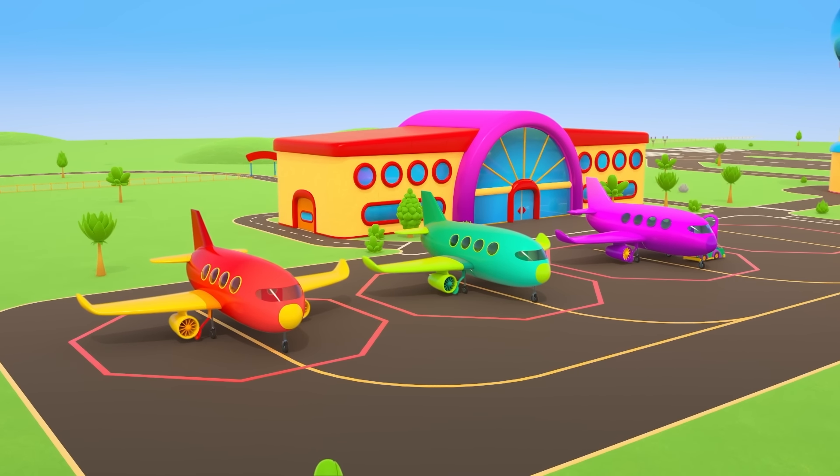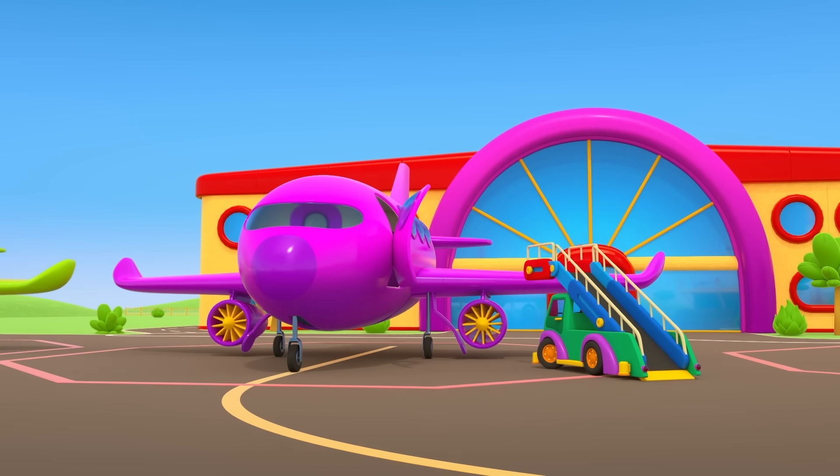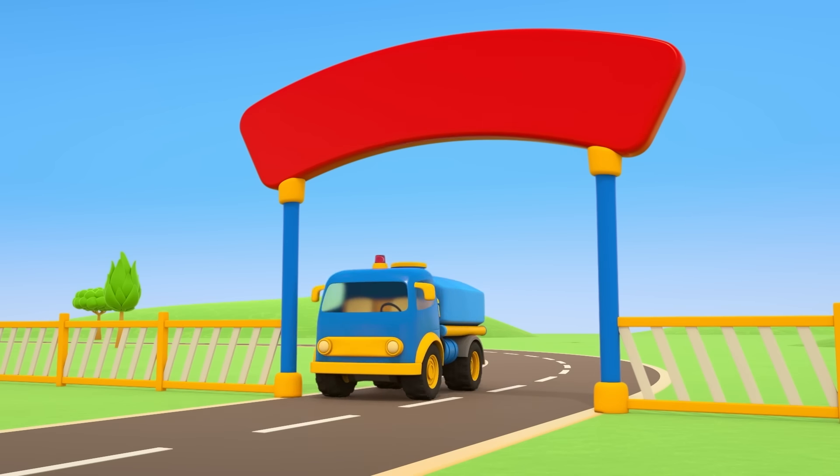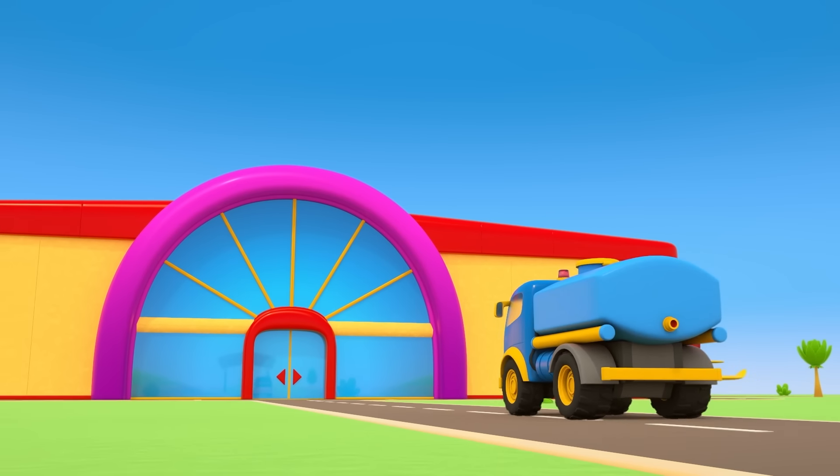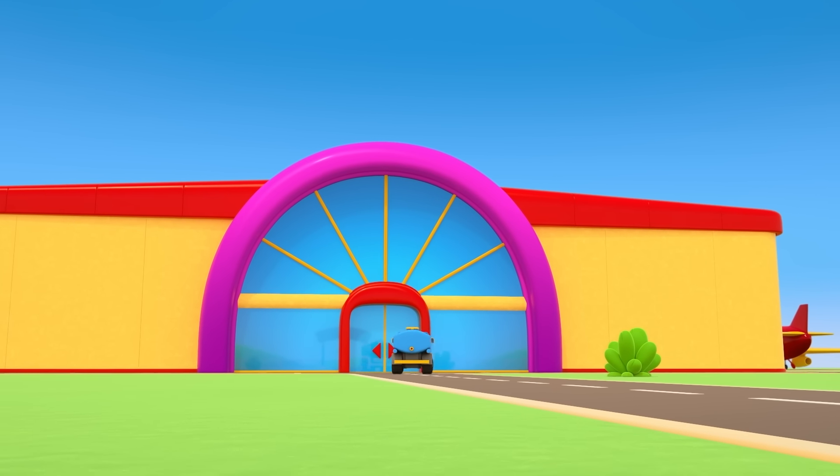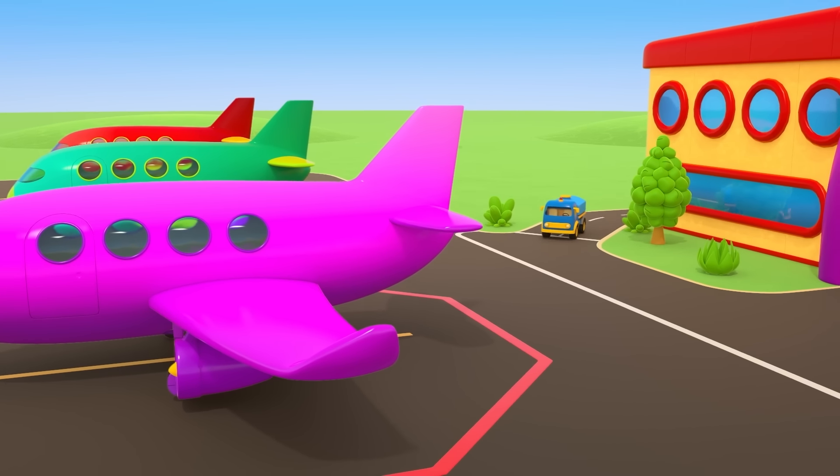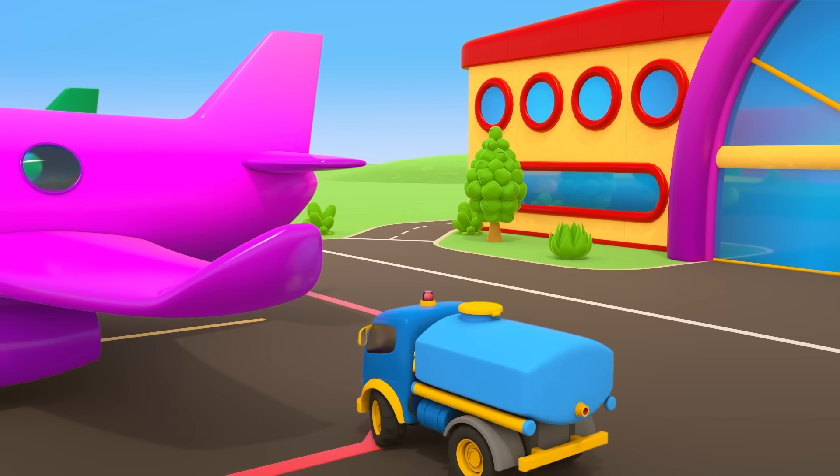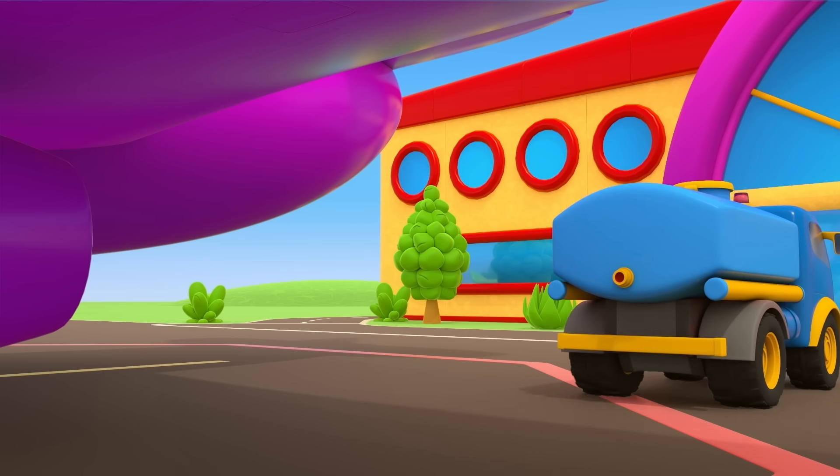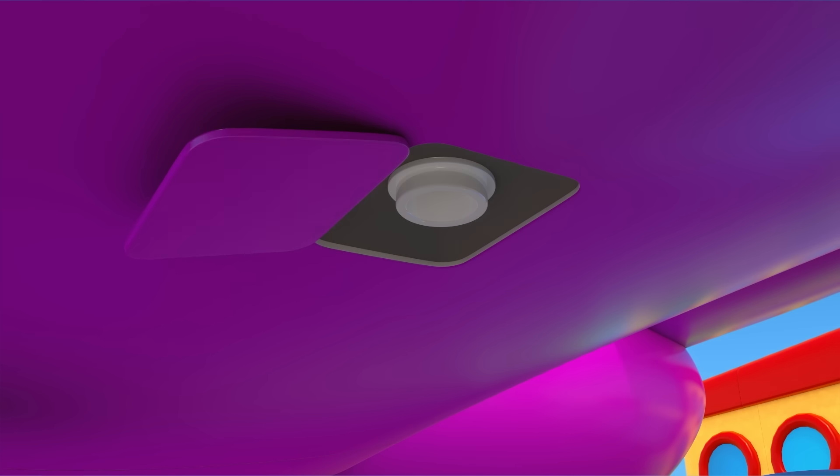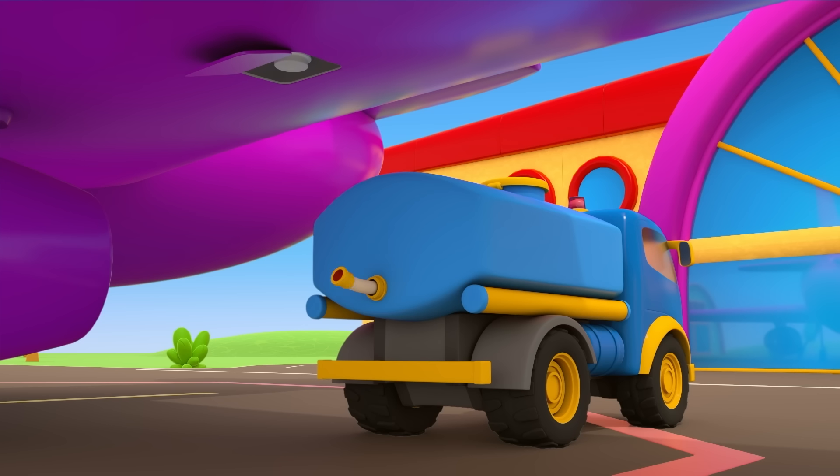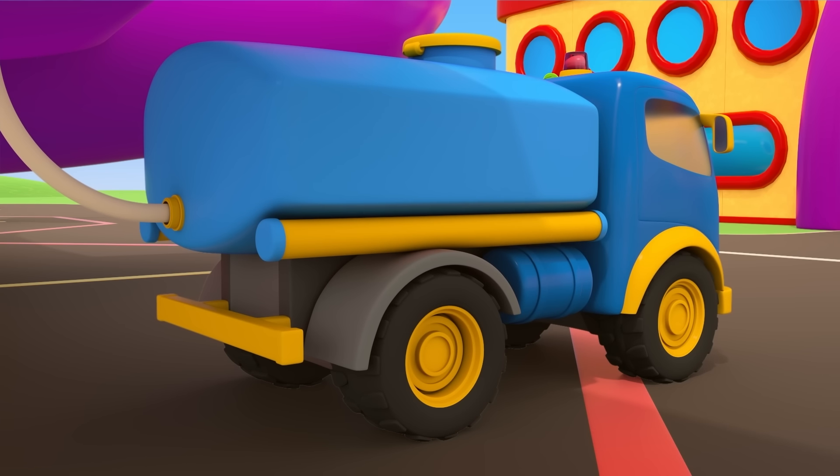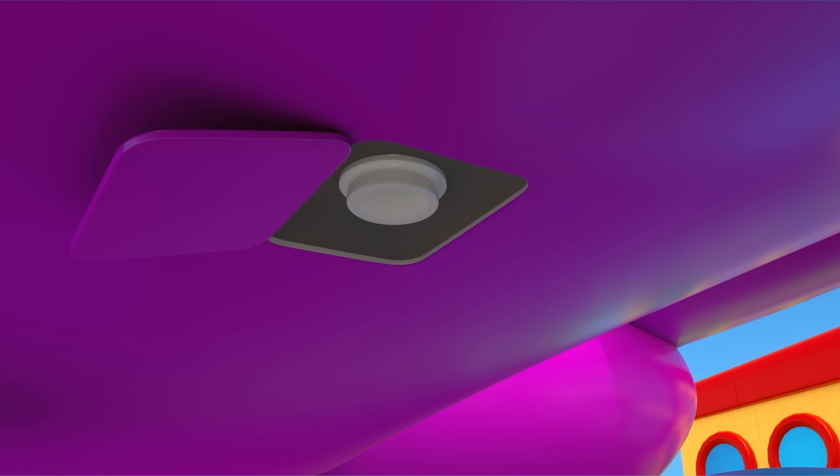This is an airport. Airplanes need fuel to fly. The blue fuel truck arrives at the airport. It will refuel the airplanes with kerosene. Kerosene is the fuel used by airplanes. Which airplane should be first? The purple one. Airplane's fuel tanks are usually in the wing. Fill it with kerosene. Done.